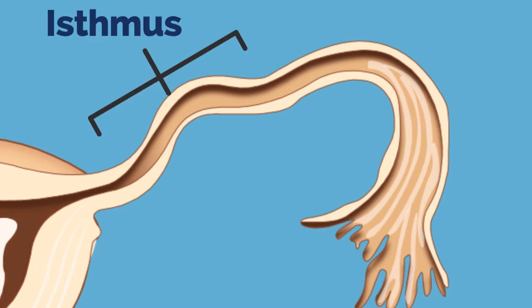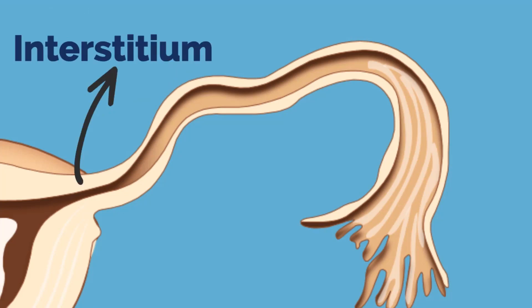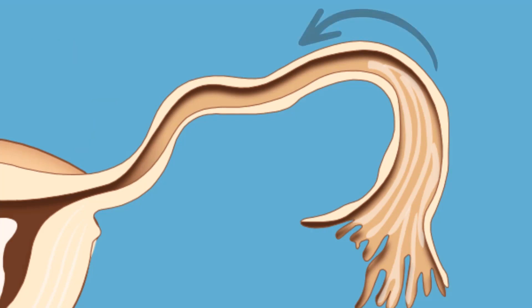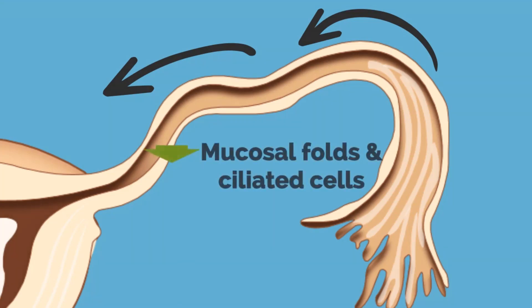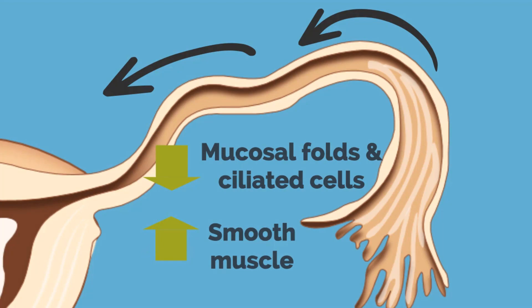The isthmus is the narrow segment adjacent to the uterine wall. The interstitium penetrates the uterine wall; the myometrium of the uterus contributes to its muscularis layer. In general, as we move towards the uterus, the amount of mucosal folds and ciliated cells decrease, and there is an increased proportion of smooth muscle in the muscularis layer.